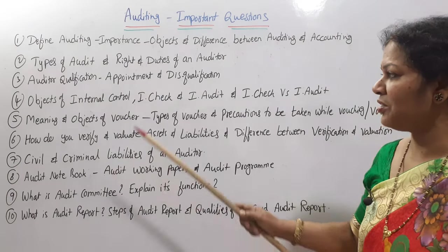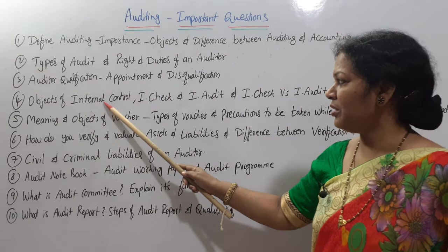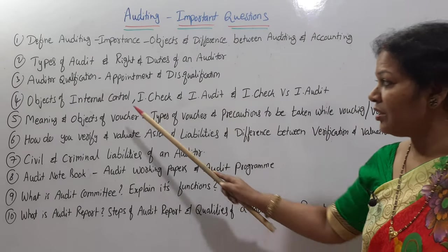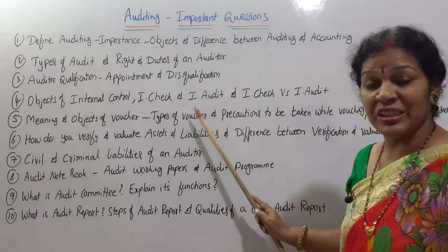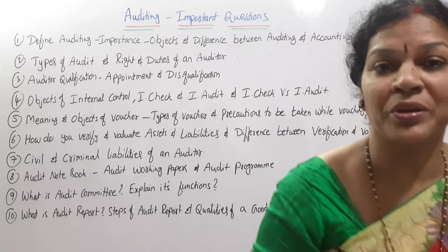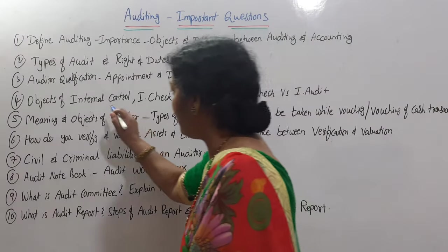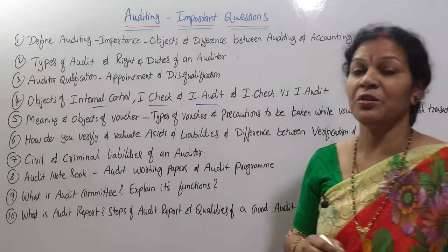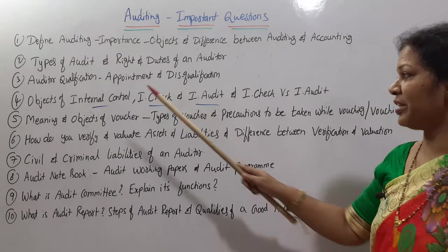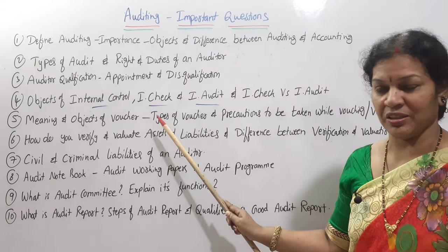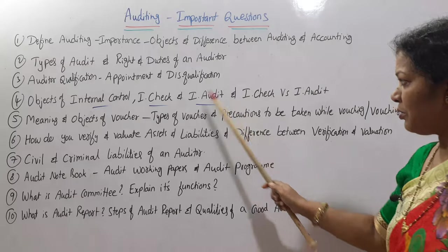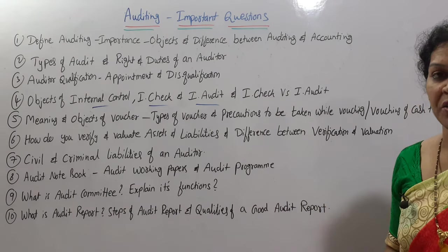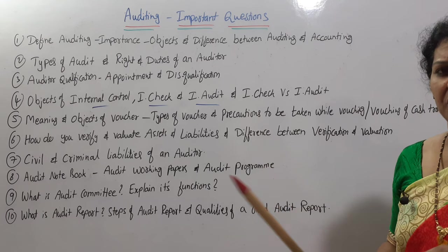Fourth question: objects of internal control, internal check, and internal audit. Out of these three, any one you can expect 100% — internal control, internal audit, or internal check. Also, at the same time, the difference between internal check and internal audit is important to prepare.